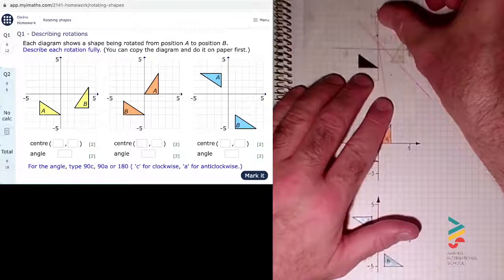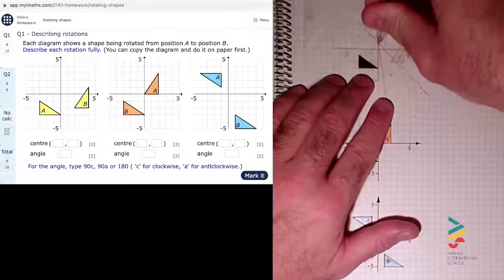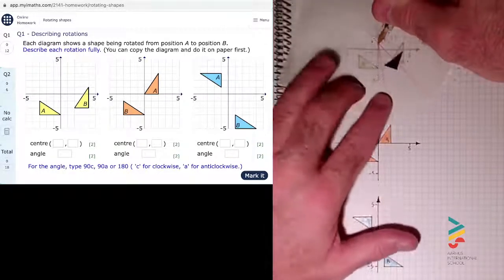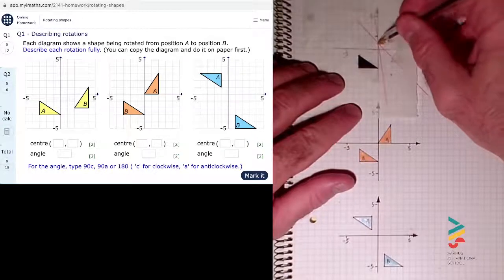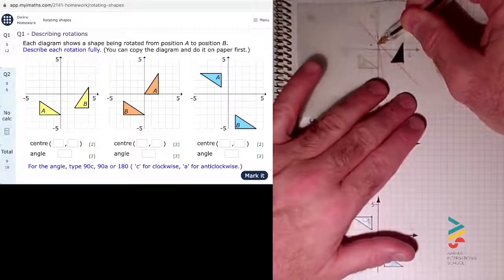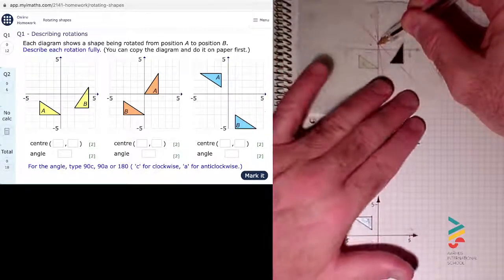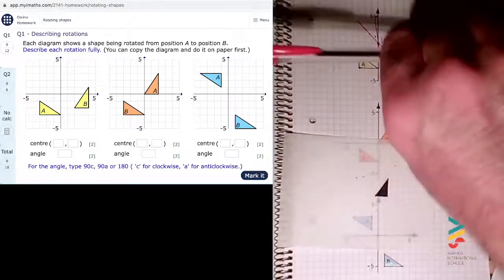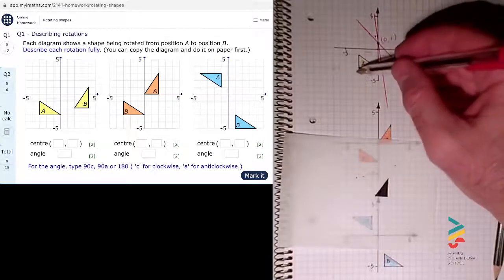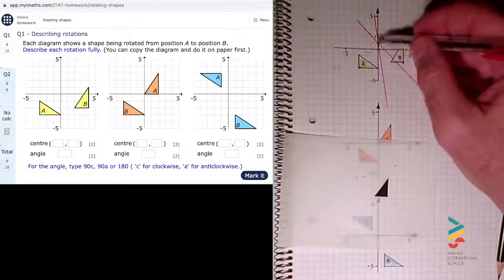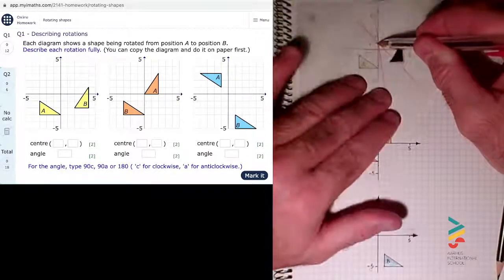I'll just check that with my tracing paper. Stick the original shape over there, stick the pen in there for a center of rotation, try and turn it around, and it ends up in the same place. From A to B, it's gone 90 degrees clockwise. I can see that because the lines on the shapes line up with the lines on my grid, and I know that the lines on my grid are at 90 degrees to each other.